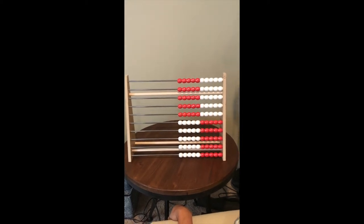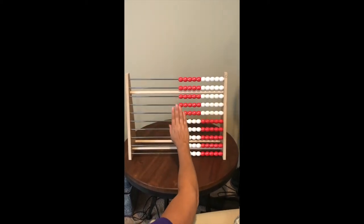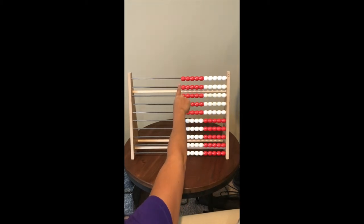While skip counting on the abacus, you want all your beads to be cleared to the right with the smiley face. We have the red in the lead.